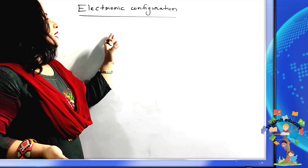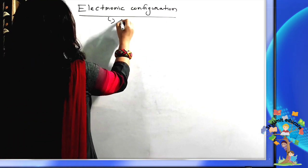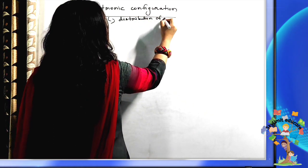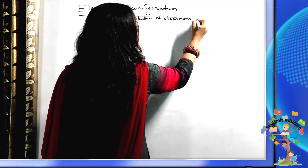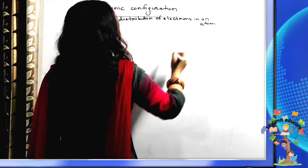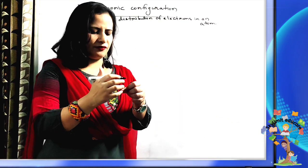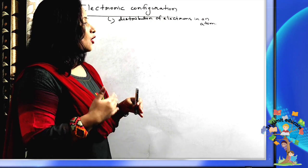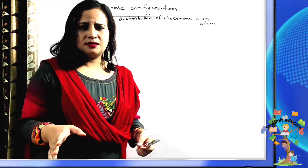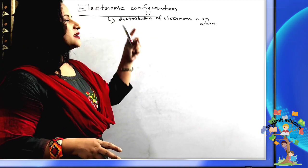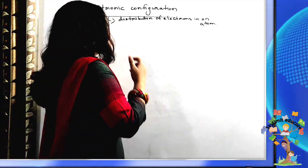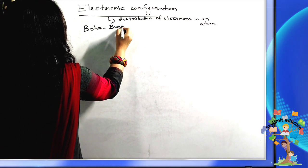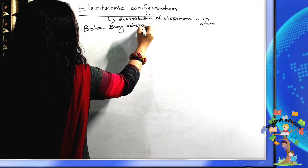Next, we will discuss electronic configuration — this is not a new word. Electronic configuration refers to the distribution of electrons in an atom. Protons and neutrons are inside the nucleus, but electrons revolve in closed circular orbits with fixed energy. The arrangement of electrons around the nucleus is the electronic configuration. We follow the Bohr-Bury scheme here, named after the two scientists who proposed it.